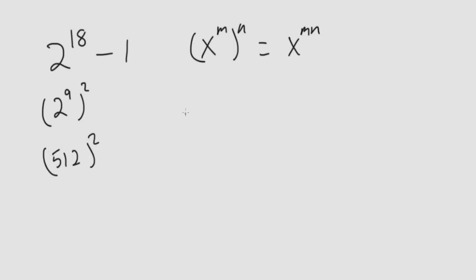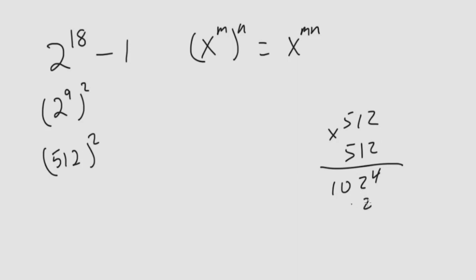That's squared. Now we can just square this: 512 times 512. 2 times 2 is 4, times 1 is 2, times 2 is 10. 1 times 1 times 2 is 2. 1, 5. 5 times 2 is 10. 5 times 1 is 5, plus 1 is 6.